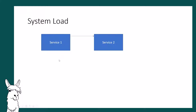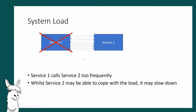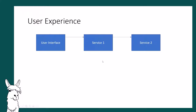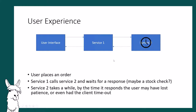Moving on to system load: this is just indicating a busy traffic service. If it's being called too frequently, service two might start timing out, or even if it doesn't buckle under load, it might just become slow and then you might get a timeout from the calling service. Similarly, you might have service two with an unstable connection to the database that replies too late — a user trying to place an order times out and closes the page.